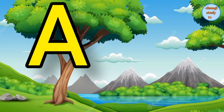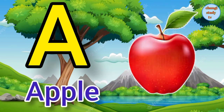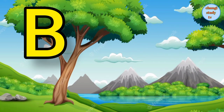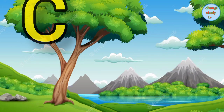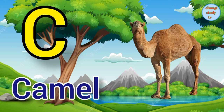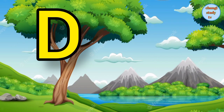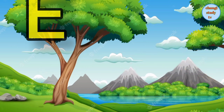A. A for apple, apple means shape. B. B for beer, beer means bhalo. C. C for camel, camel means oon. D. D for donut, donut means donut.